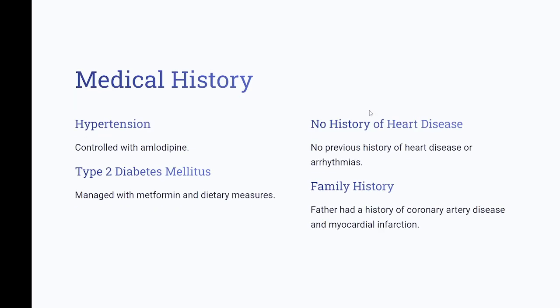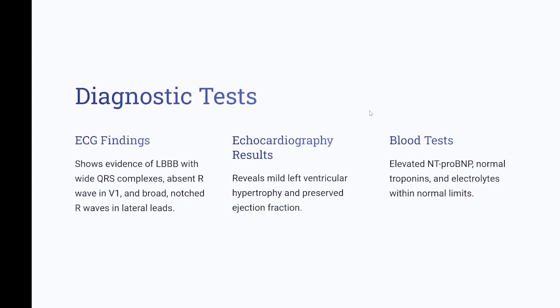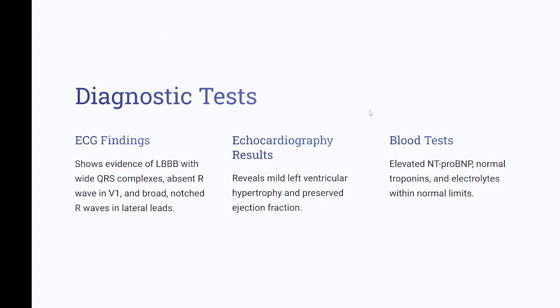Social history: non-smoker, occasional alcohol use. Physical examination: mildly distressed due to dyspnea. Vital signs: BP 145/85 mmHg, HR 78 BPM (irregular), temp 36.7°C. Cardiovascular: irregular heart rhythm, no murmurs, rubs, or gallops. Respiratory: bibasilar crackles, no wheezes. No peripheral edema. ECG shows evidence of LBBB with wide QRS complexes, absent R-wave in V1, and broad notched R-waves in lateral leads.